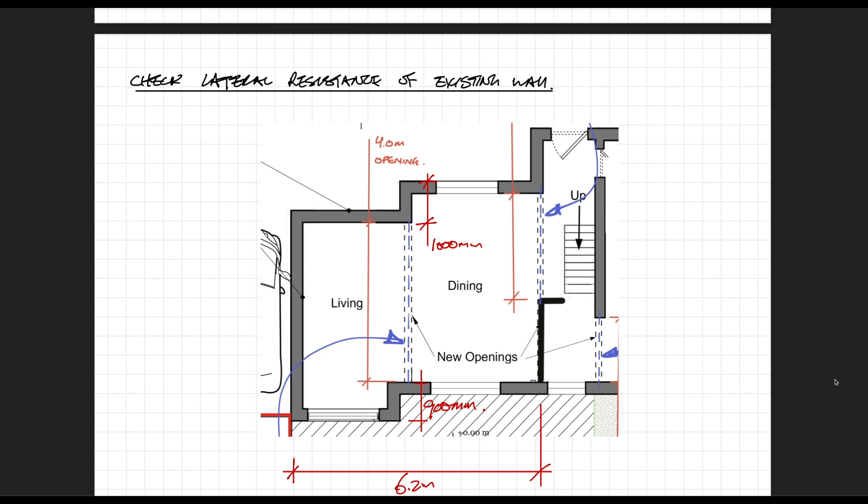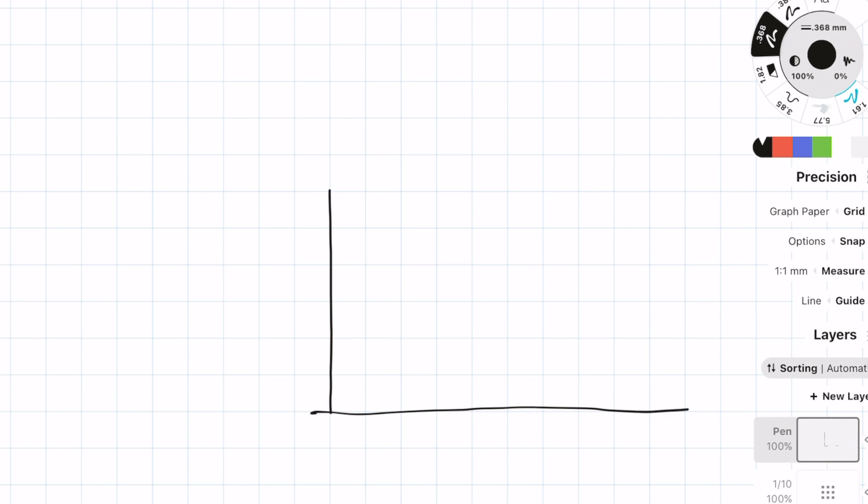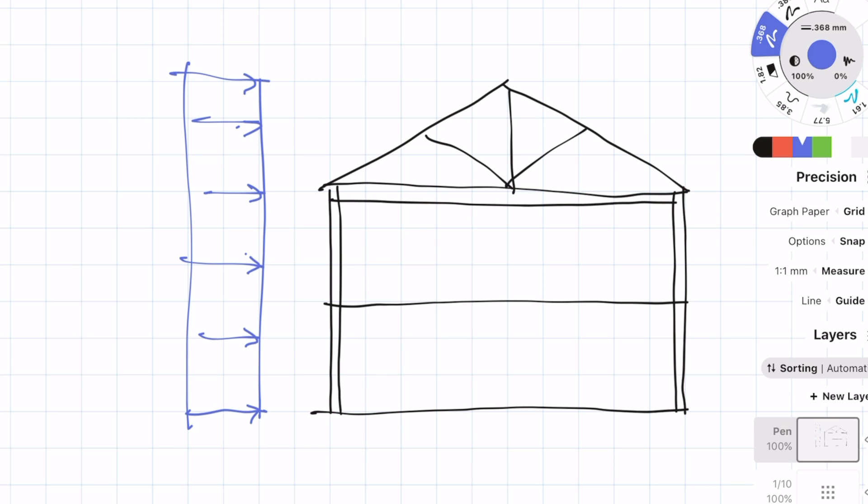In this example, this is a previous calculation or design which I had done. There are two internal load bearing walls which are going to be removed so the client can create a big open plan space. As you can see, the load bearing walls are doing two functions: supporting the floor and walls above, and providing lateral restraint to the external masonry walls. By removing this internal wall we're essentially removing a really large structural shear wall, so we need to check that the external wall is still capable of resisting lateral loads without failing.